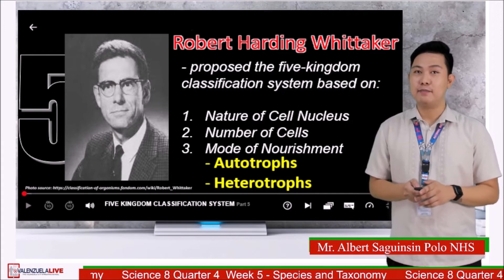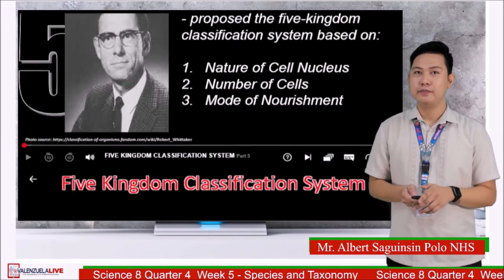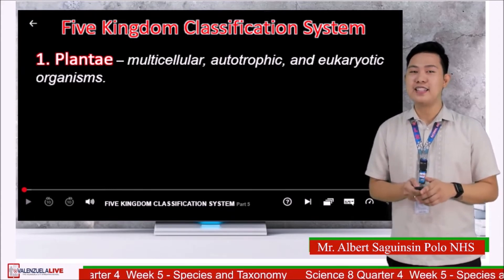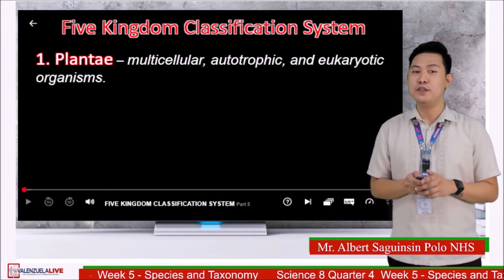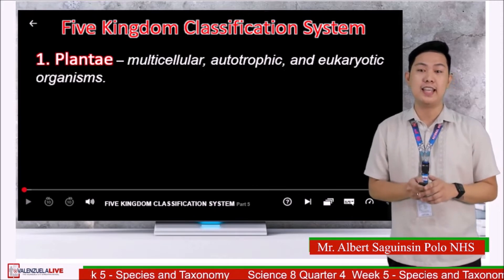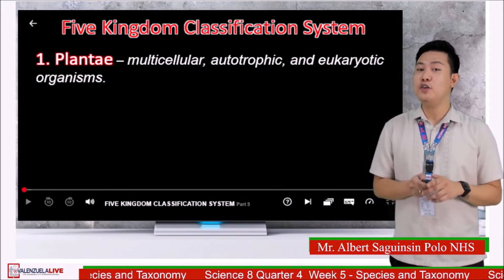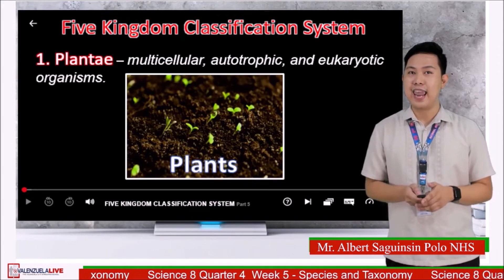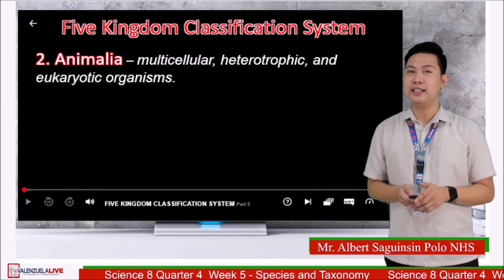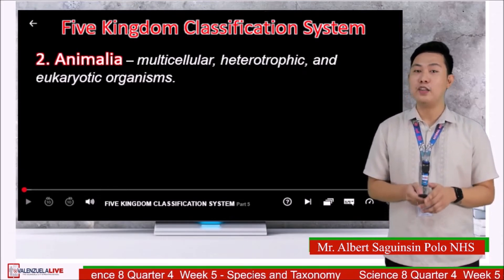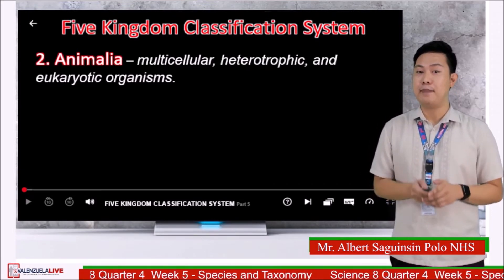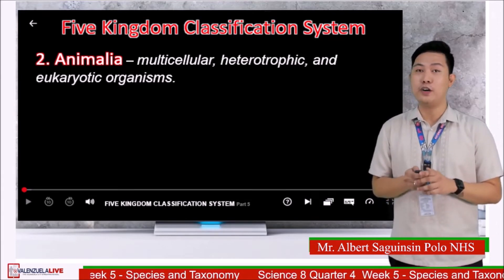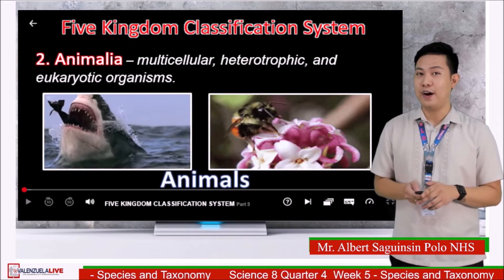Let us look at the five kingdom classification system. First is kingdom Plantae — multicellular organisms that produce their own food through photosynthesis, with cells containing a true nucleus. Obviously, all plants belong to kingdom Plantae. Second is kingdom Animalia — organisms that are multicellular, rely on others for food and energy, and contain eukaryotic cells. Examples are animals.